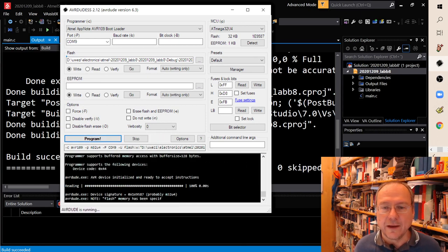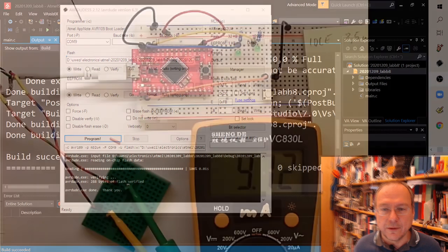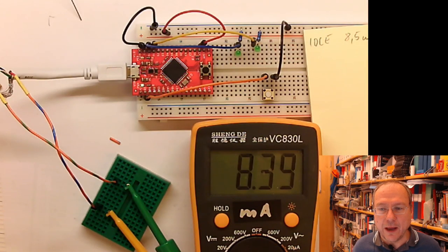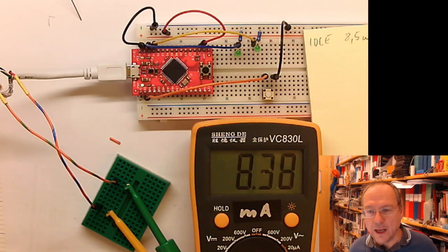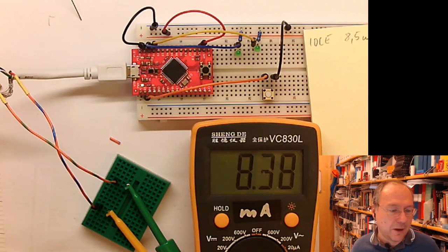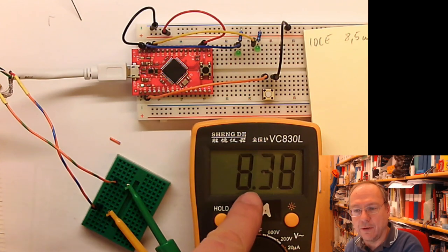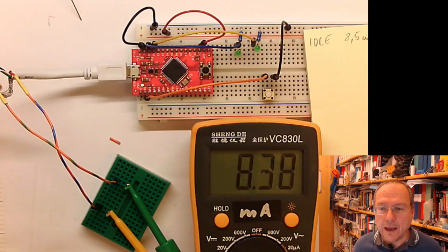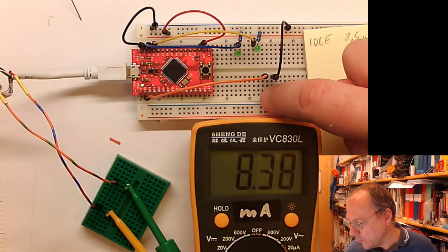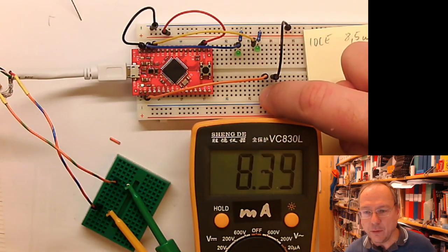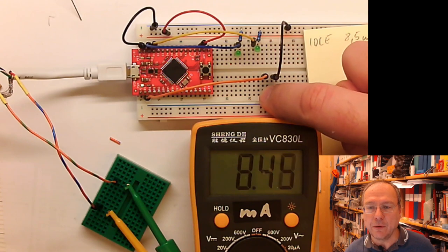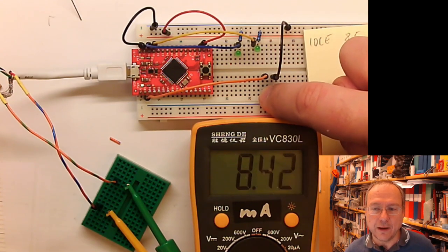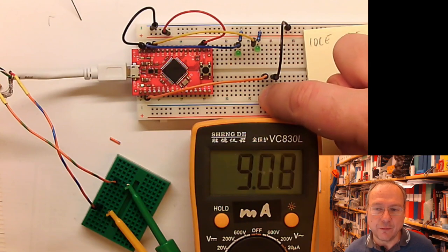So we program the code like this and we transition here and we have 8.4, 8.5 sometimes milliamps on the meter. And when I press the white button here we see how it jumps up, but that's also because the LEDs are on, so it's hard to tell the actual difference of what it would use in active mode.